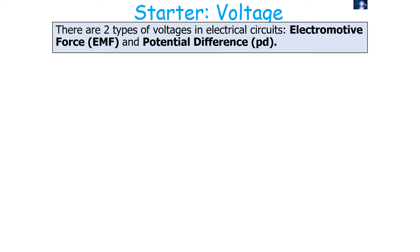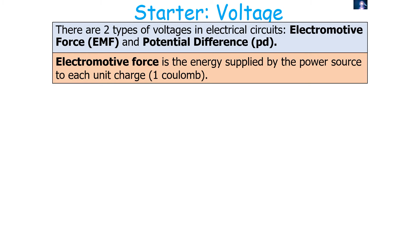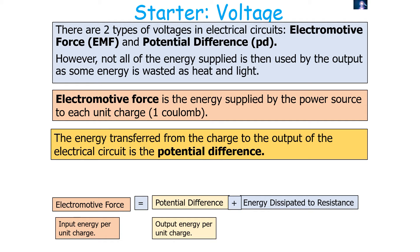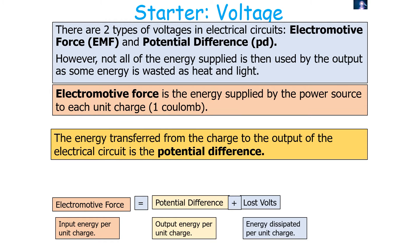There are two types of voltage in electrical circuits: the electromotive force, the EMF, and the potential difference, the PD. The electromotive force is the energy supplied by the power source to each unit of charge — to one coulomb — whilst the energy transferred from the charge to the output of the circuit is the potential difference. In theory, the EMF would equal the potential difference, but there is always some energy dissipated due to resistance, which we call the lost volts. So EMF — input energy per unit charge — equals output energy per unit charge plus energy dissipated per unit charge.